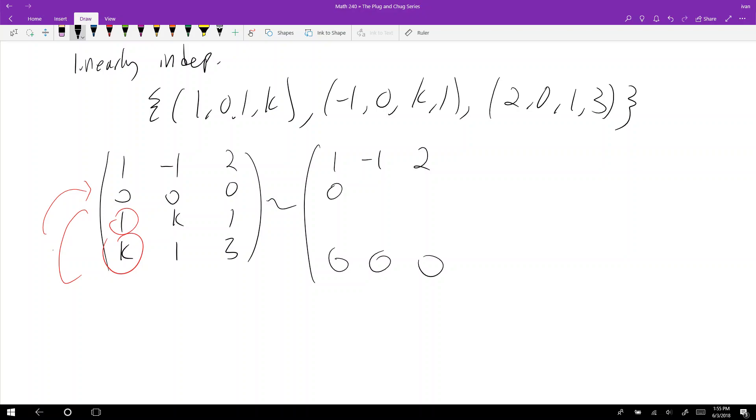And now we need to zero out the first column besides the first row. And what is this? Then you get K minus negative one, so this becomes K plus one. And then you get one minus two, so this goes to negative one. And then in row three, I get K—well okay, so you get zero. And then you get one minus K...